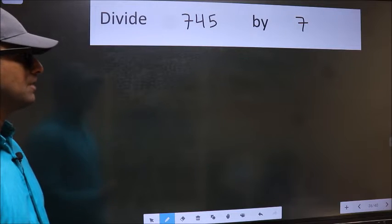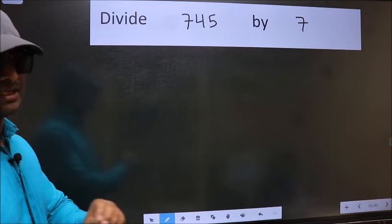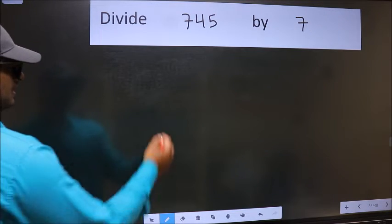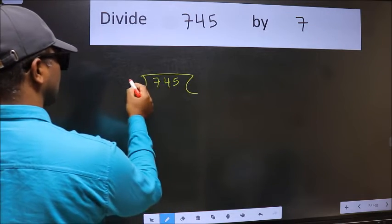Divide 745 by 7. To do this division, we should frame it in this way: 745 here and 7 here.